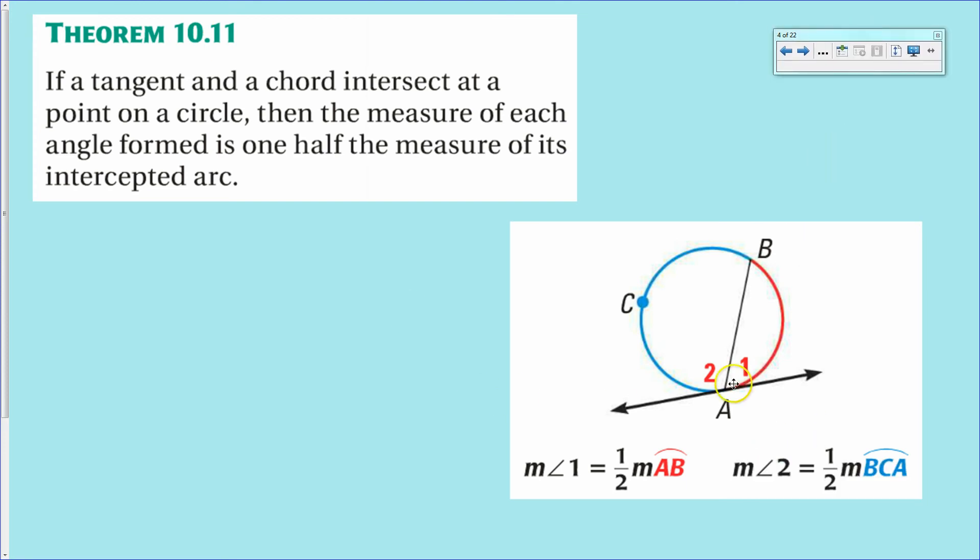In fact it does, and that is Theorem 10.11. Theorem 10.11 says that if you have a tangent line and a chord intersecting that tangent line at its point of tangency, then you can talk about the major arc or the minor arc in relation to the angle that the chord forms with the tangent. So the minor angle corresponds with the minor arc, and the ratio again is one to one-half. So this angle right here is one-half the measurement of the central angle of arc AB, and likewise angle 2 here is half the measurement of the central angle BCA of arc BCA.